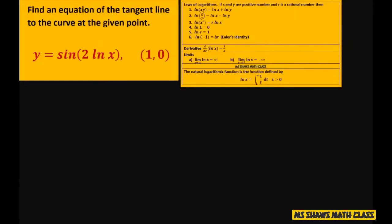So let's take our derivative. So y prime equals – you take the derivative of sine, which is cosine, copy down your inner function, multiply this by the derivative of your inner function, which is 2 divided by x.